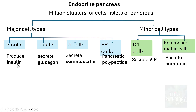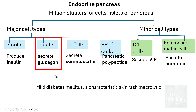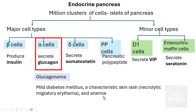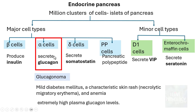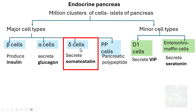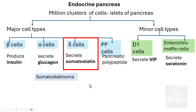Tumors of beta cells are called insulinoma — we will talk about that later. Tumors of alpha cells are called glucagonoma. These patients have mild diabetes mellitus, a characteristic skin rash called necrolytic migratory erythema, and anemia. They also have very high plasma glucagon levels, as a tumor of alpha cells — which normally secrete glucagon — would logically produce excess glucagon. Tumors of delta cells are called somatostatinoma. Clinical features include diabetes mellitus, gallstones, steatorrhea, hypochlorhydria, and high plasma somatostatin levels.